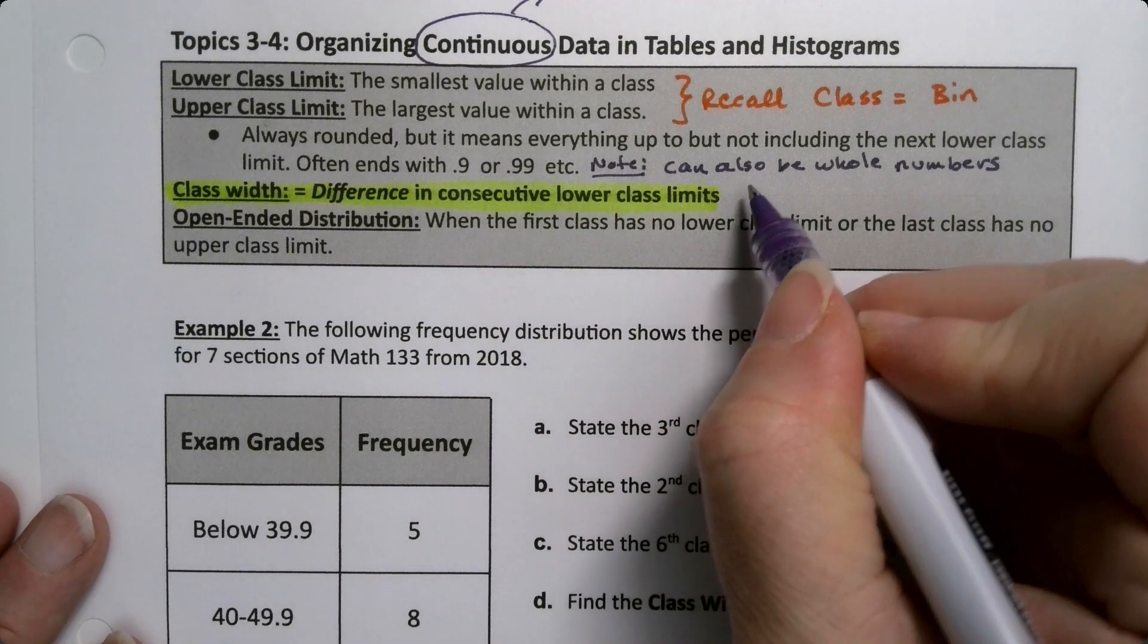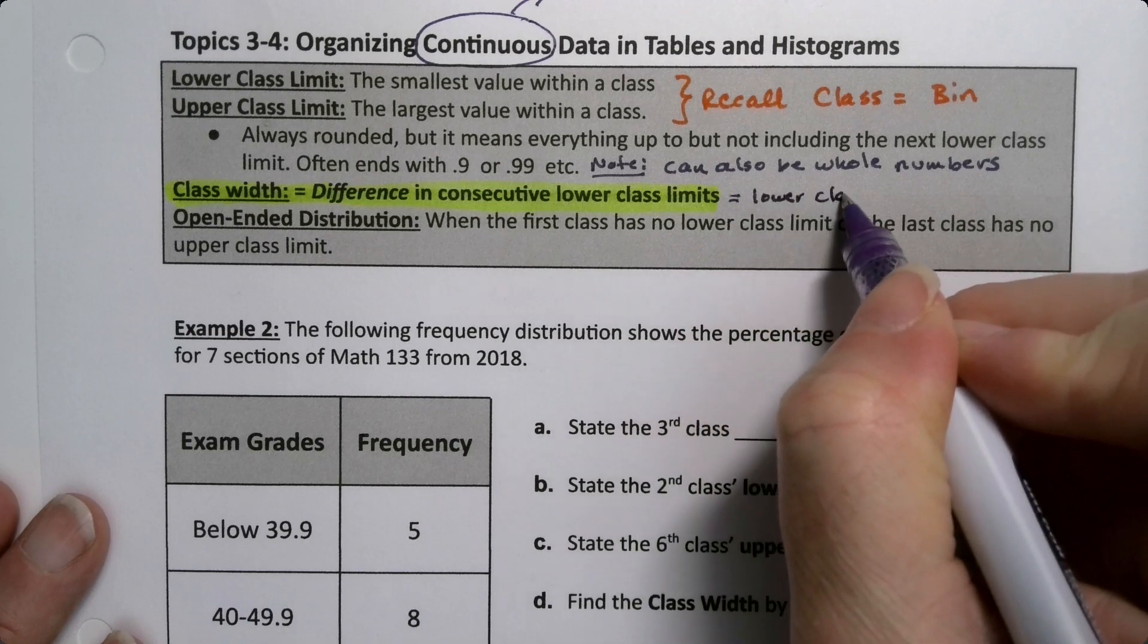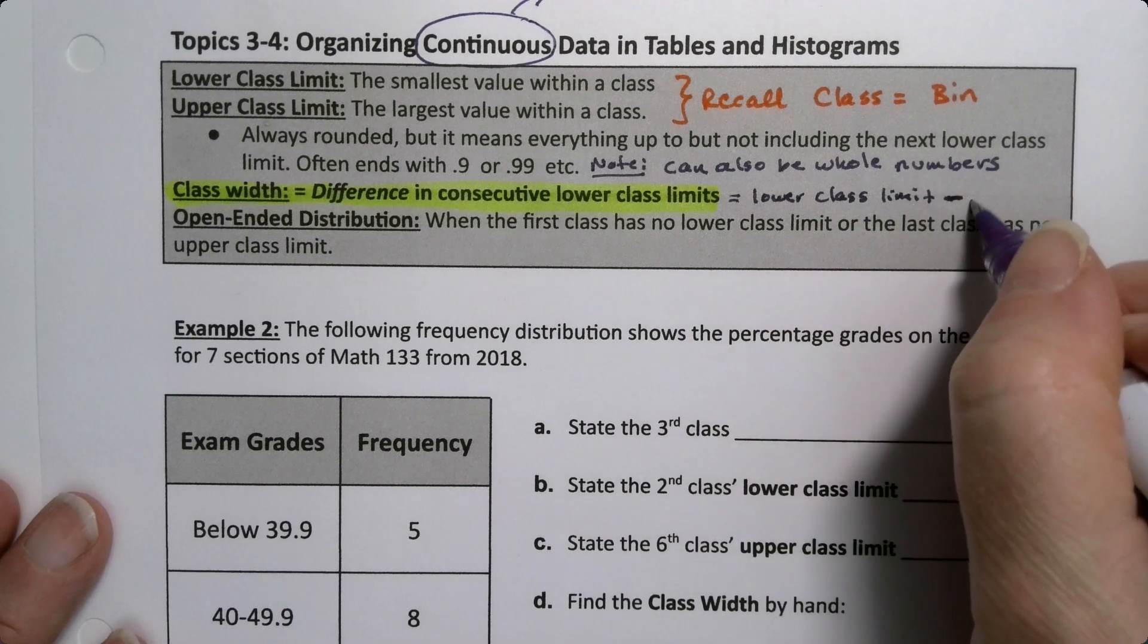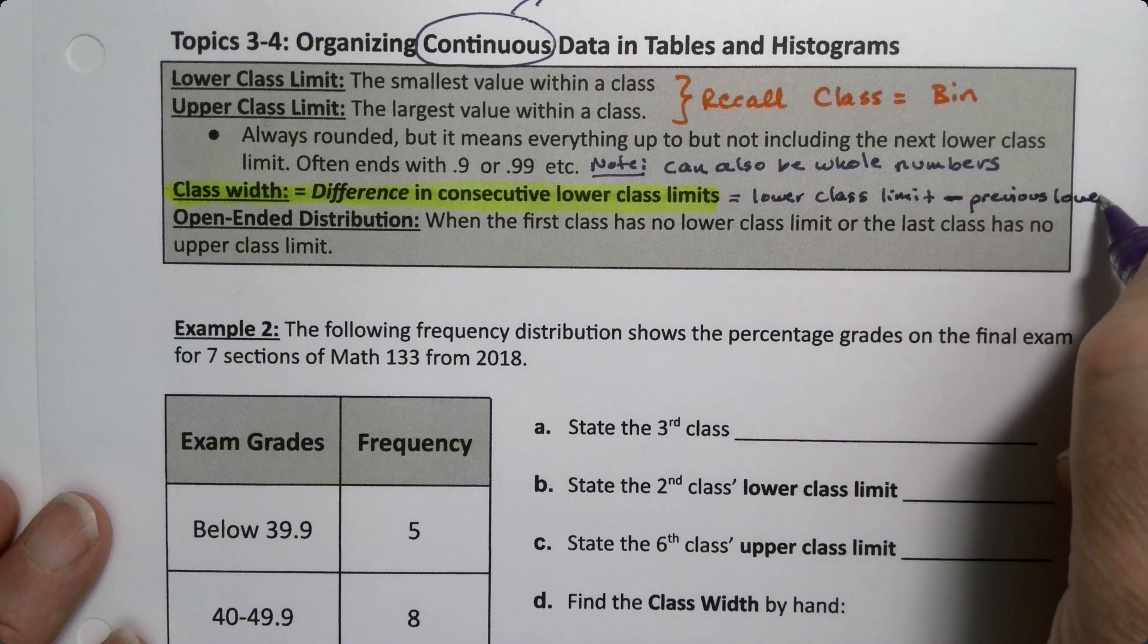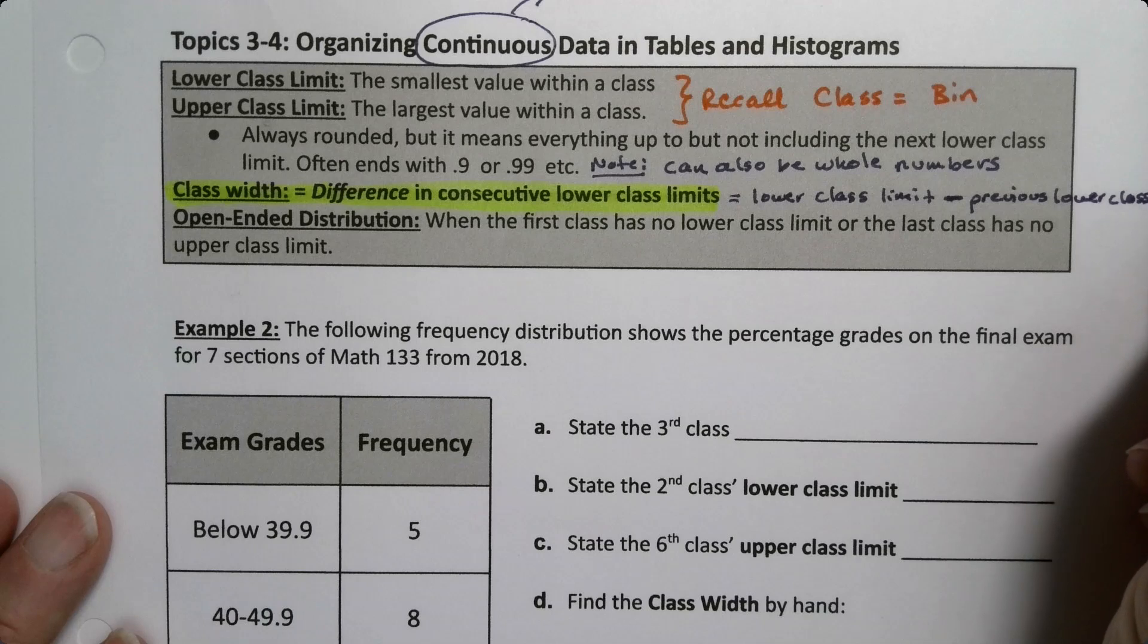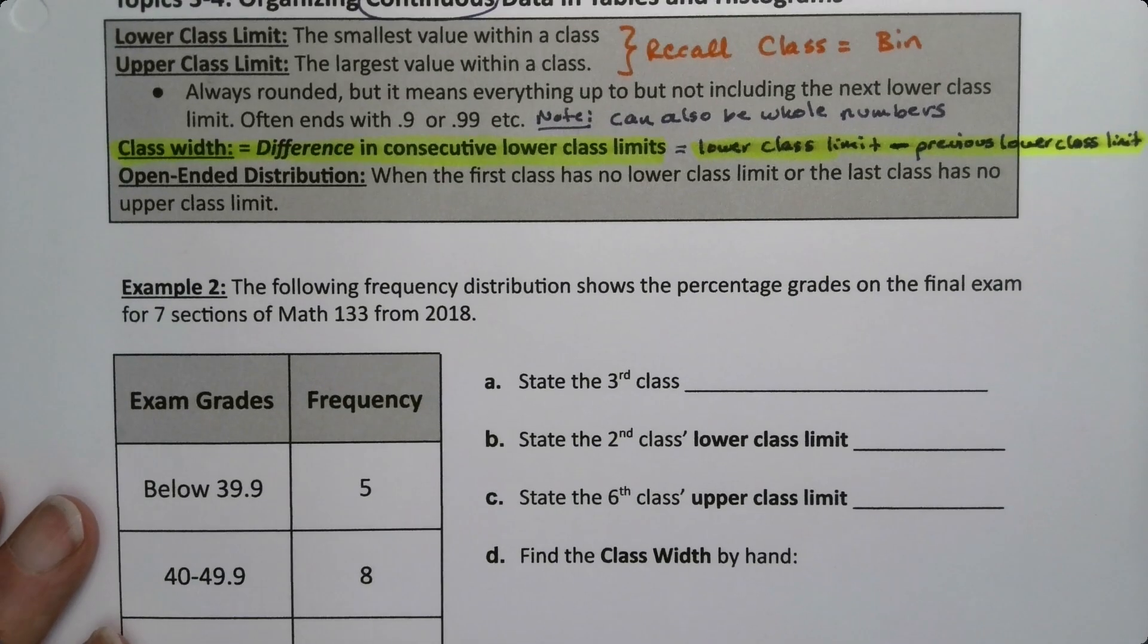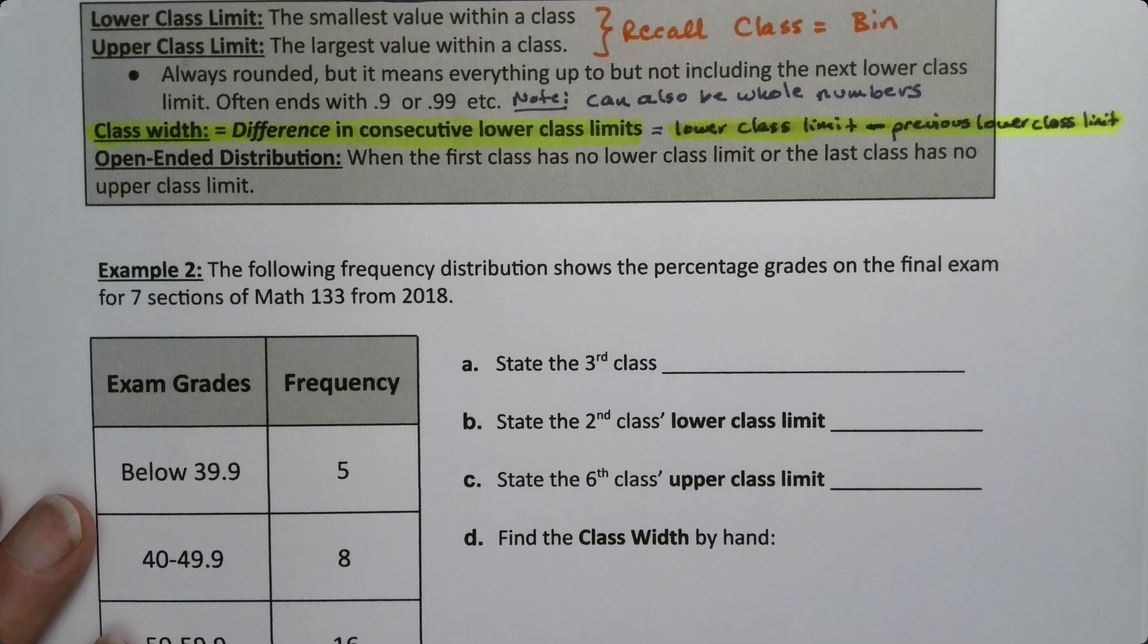Let me write it as a formula. Lower class limit minus, because that's what difference means, subtract the previous lower class limit. That's what consecutive means. So take one lower class limit minus the previous lower class limit.